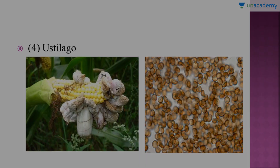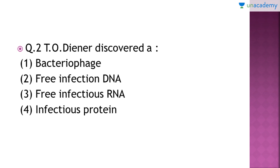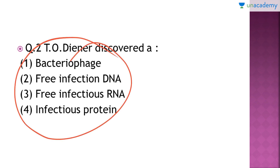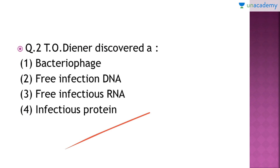Now we are moving to question number 2: Teodener discovered which of the following? It's a very easy question. The right answer is option number 3 — Teodener discovered a free infectious RNA, also called a viroid, in 1971.